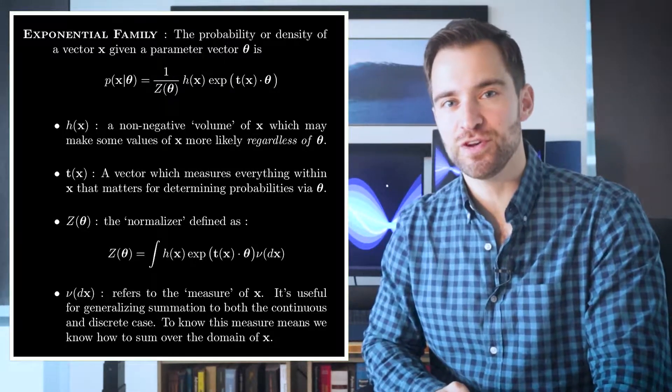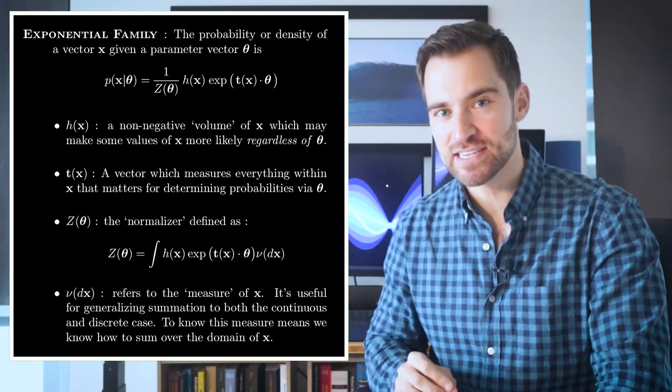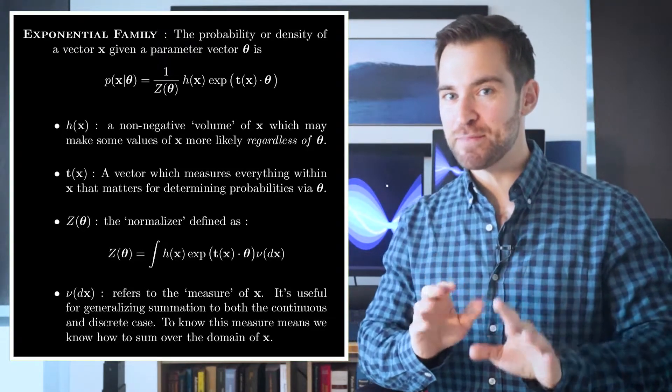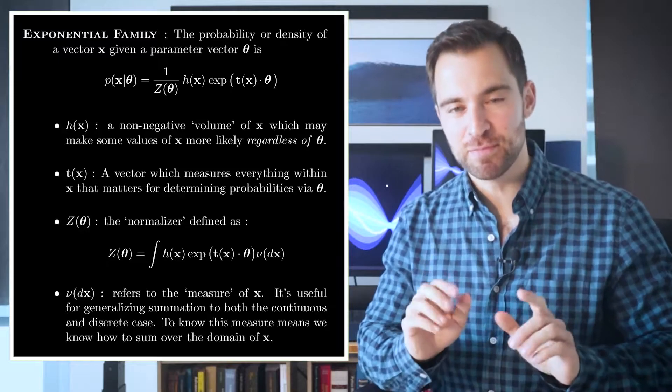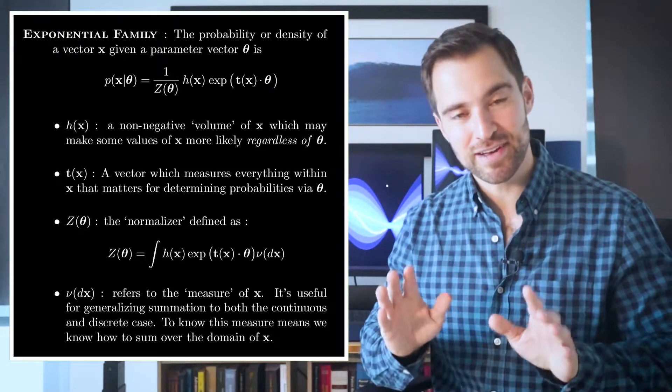With all that, the generality comes from the choices you could make. For certain choices of h(x), t(x), and the domain of x, you'll get a specific distribution, possibly one that you've seen before. At the same time, don't let that limit your impression of the flexibility here. Serious modelers may make very complicated choices to model complicated things.